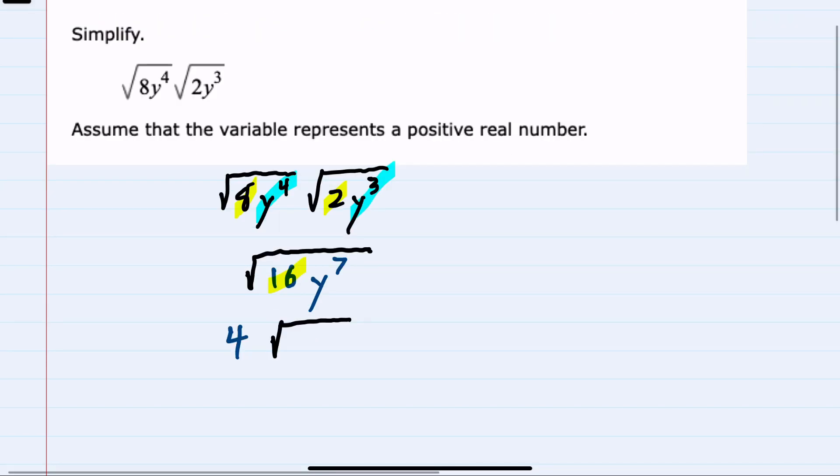And then for the y^7, since we are taking a square root, we can rewrite that with the largest possible even power as y to the 6th power times another y. That is our y^7.